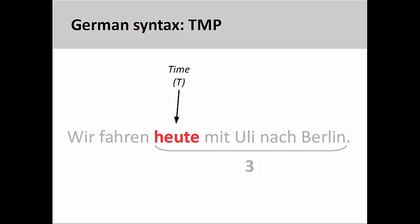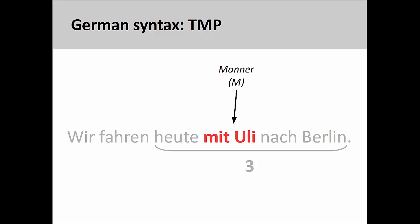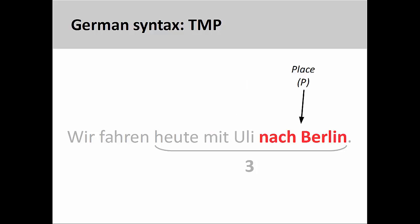In a German sentence, elements in the third position are arranged according to time, manner, and place. This is known as the TMP rule. The first element expressing time, hier heute, will always come first. The element expressing manner will come second. Here, to illustrate this point, I have added the dative prepositional phrase, mit Uli, with Uli, to the sentence we have been examining. The third element, here the dative prepositional phrase, nach Berlin, will express place.